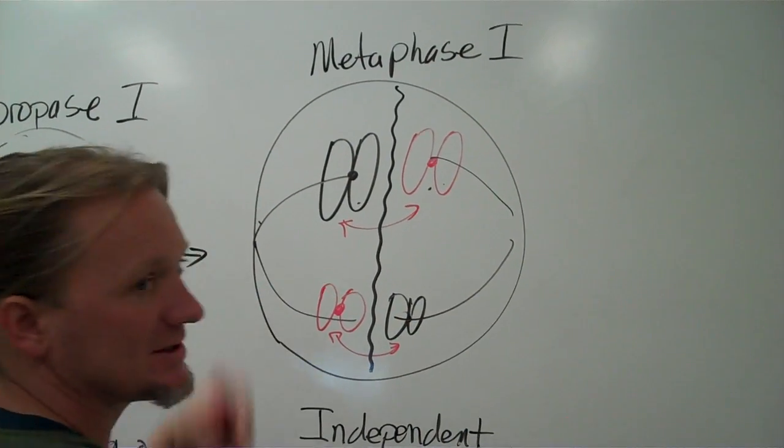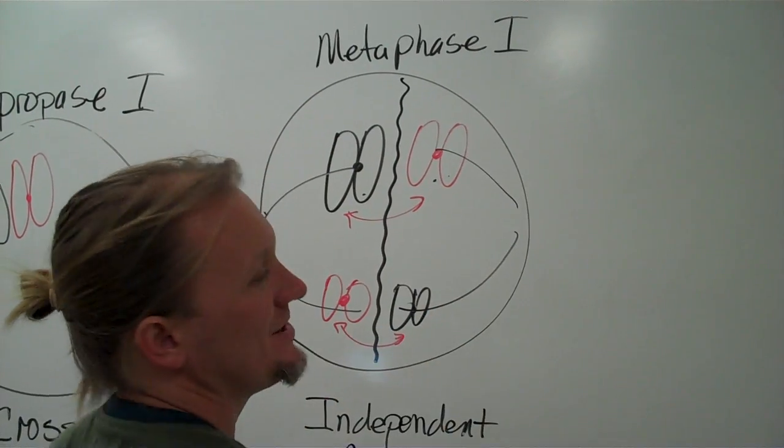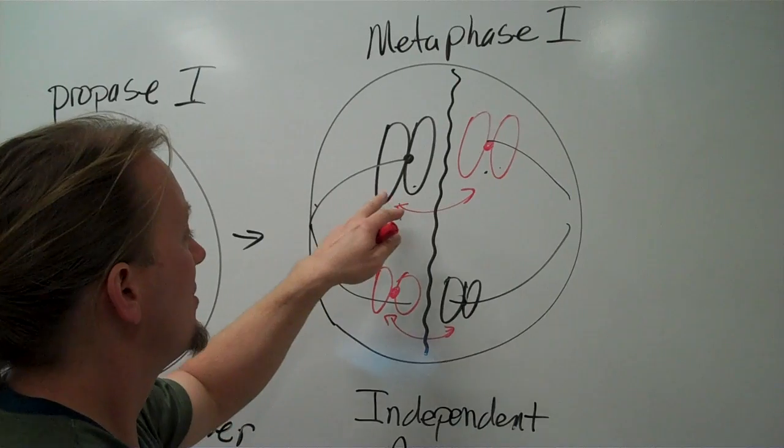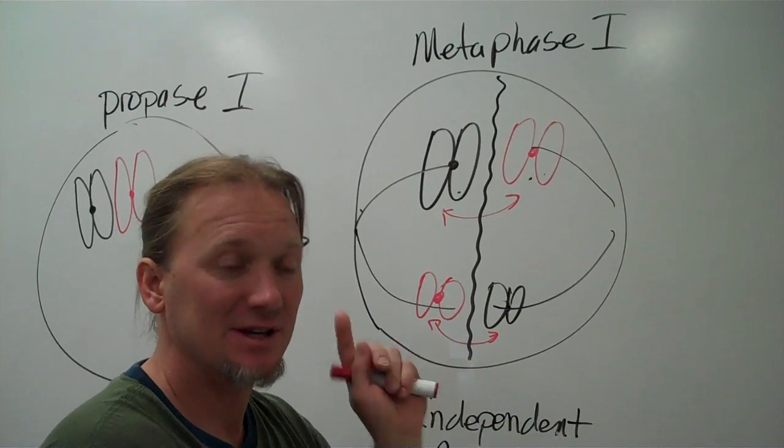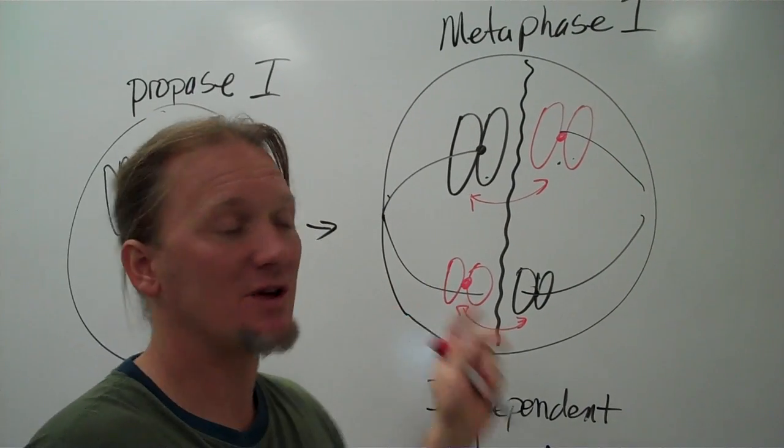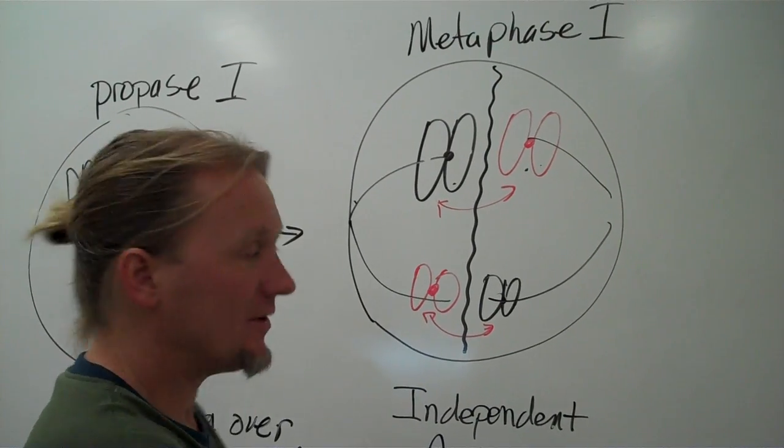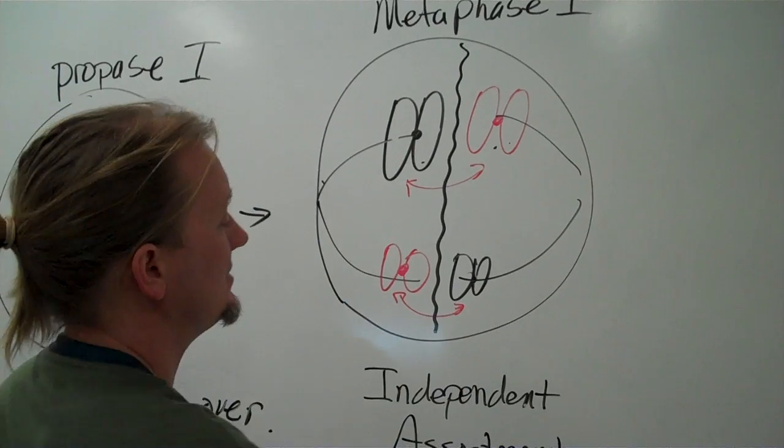So obviously the end product of this is going to be two cells like this. Now the two cells are already not identical. Because for one, the homologous pairs don't necessarily have the same alleles. They do have the same genes but not the same alleles. And because we've had crossing over, these individual sisters are not identical anymore either. So they swapped around some DNA here and here with these guys.